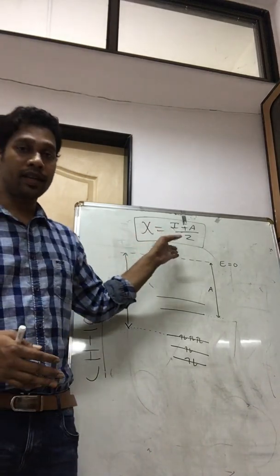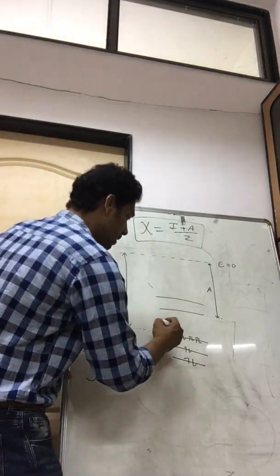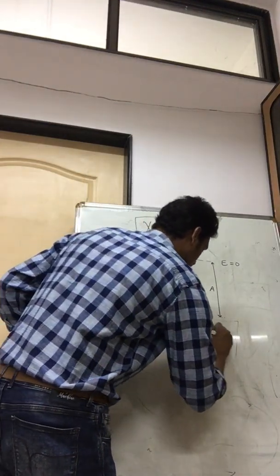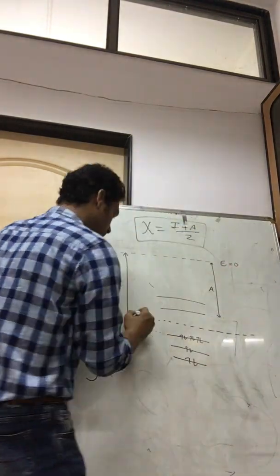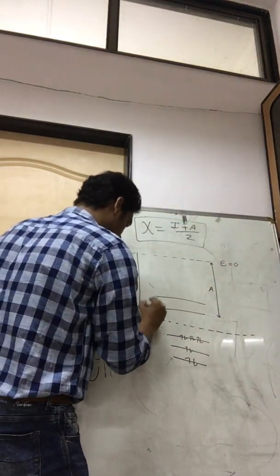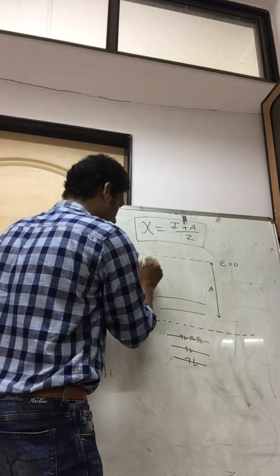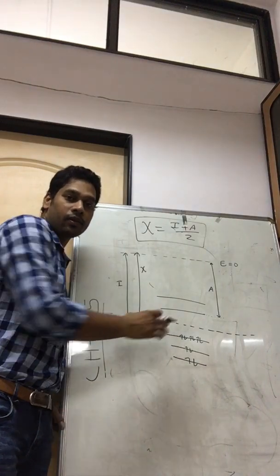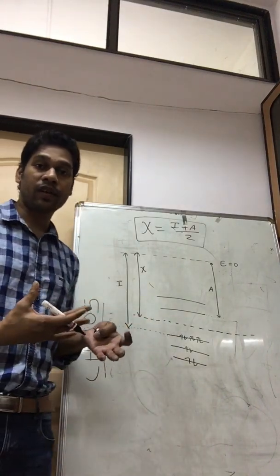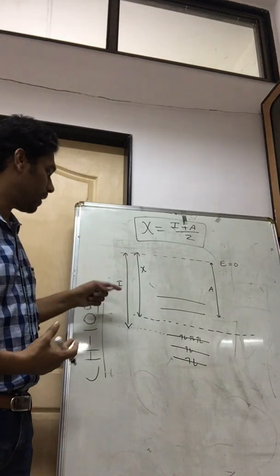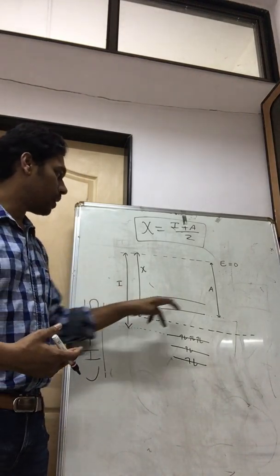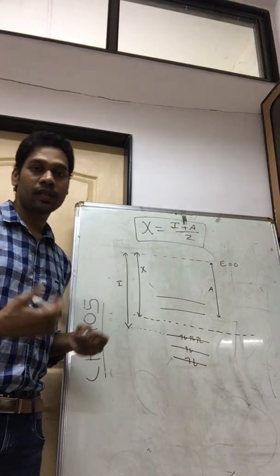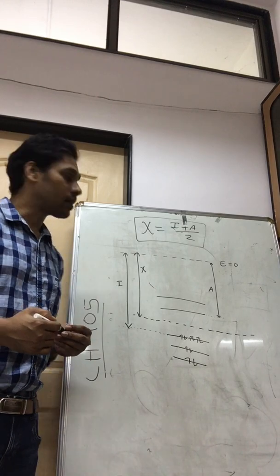By looking at the formula, one can easily determine what electronegativity is. Electronegativity chi equals (i + a) / 2 — it is basically somewhere in between. There is no real electronic level there, so an electron cannot really stay there. That is why we can't experimentally find it. But if you know ionization energy and electron affinity, one can find out electronegativity by using the Mulliken formula: chi = (i + a) / 2.